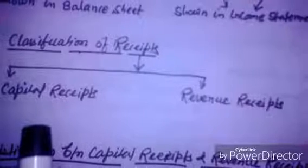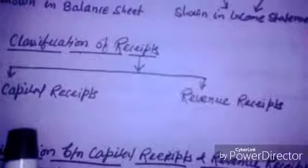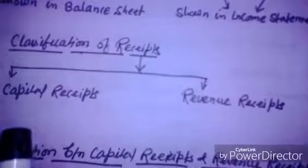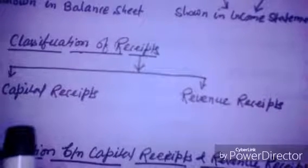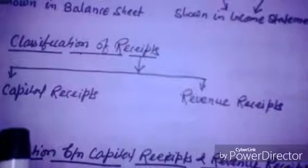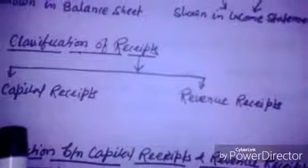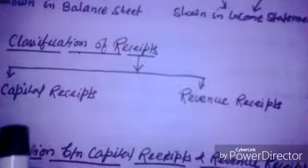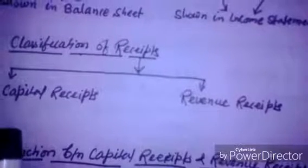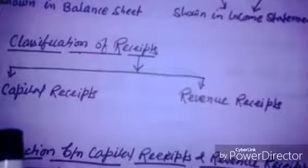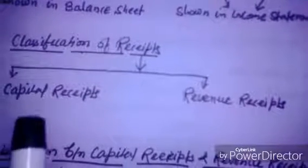The features of capital receipts are as follows. First, capital receipts are not obtained in the course of normal business activity. Second, capital receipts are generally of non-recurring nature. Third, capital receipts are shown in the balance sheet. Fourth, capital receipts are meant for some specific purpose. Fifth, capital receipts create a liability.